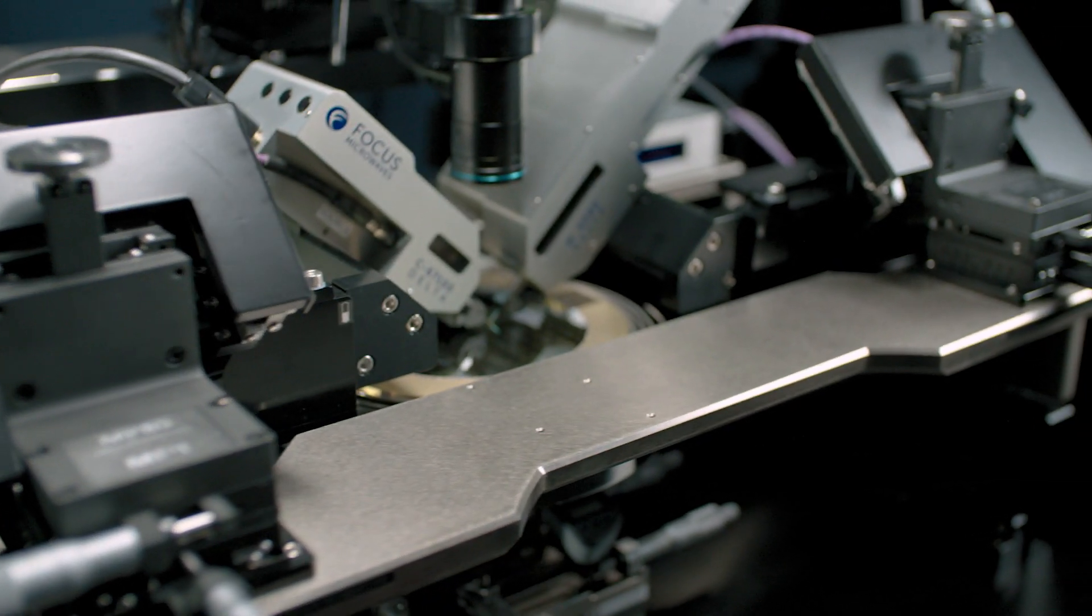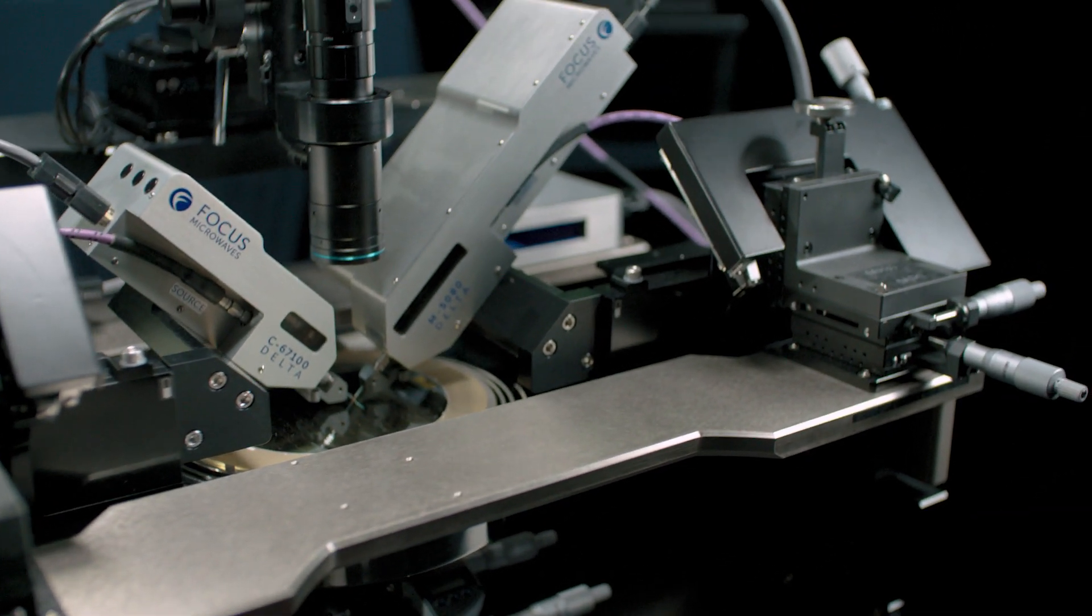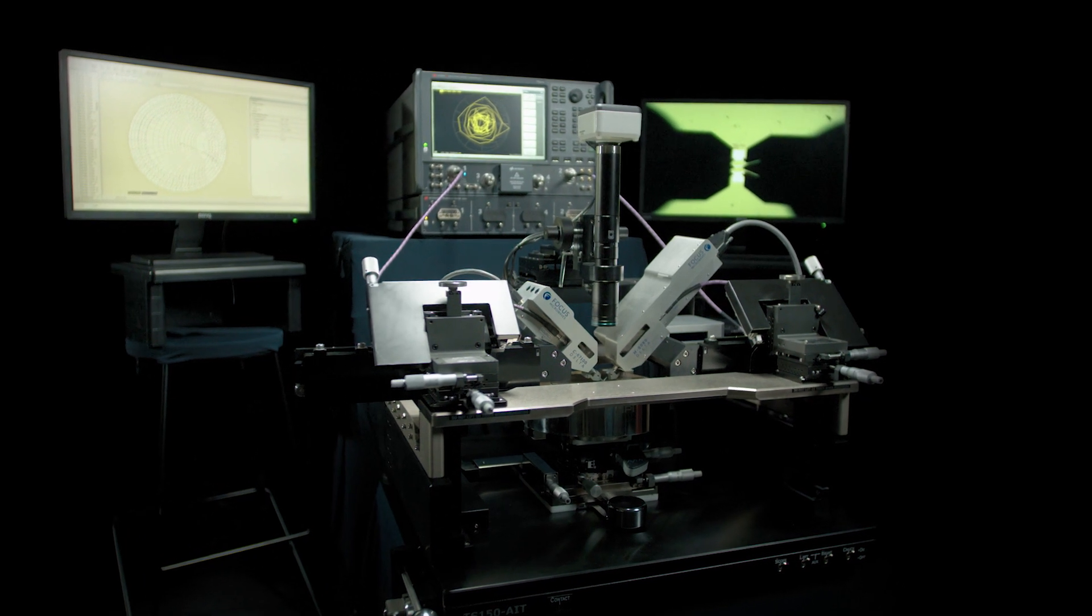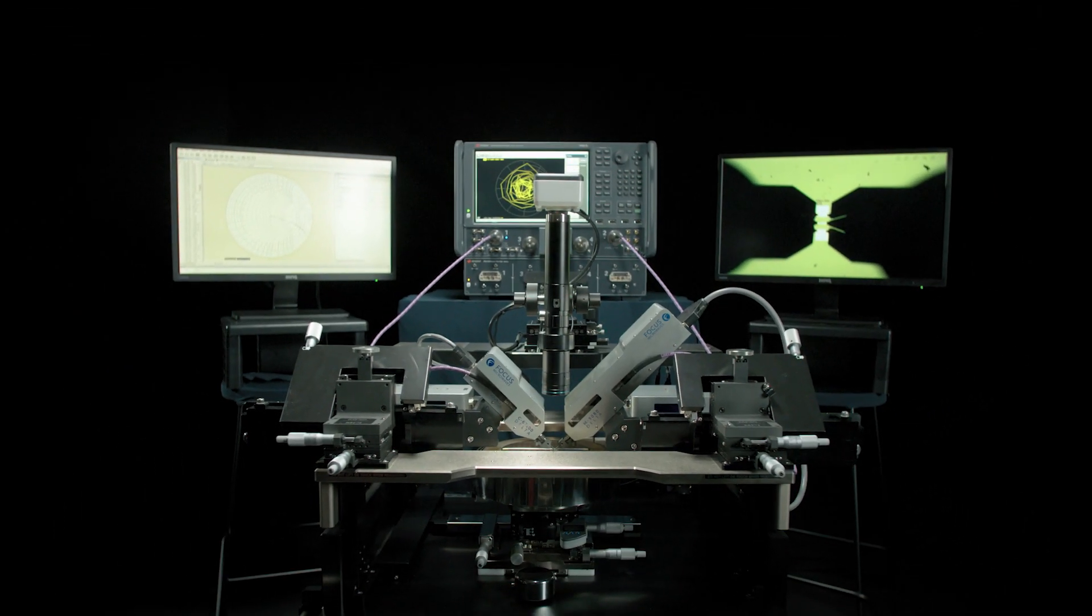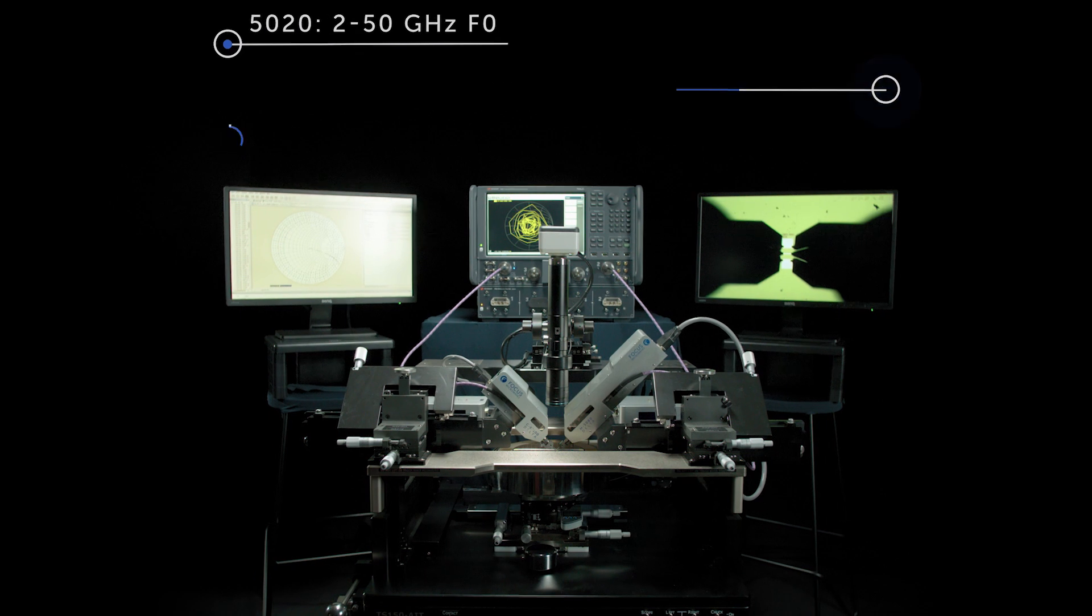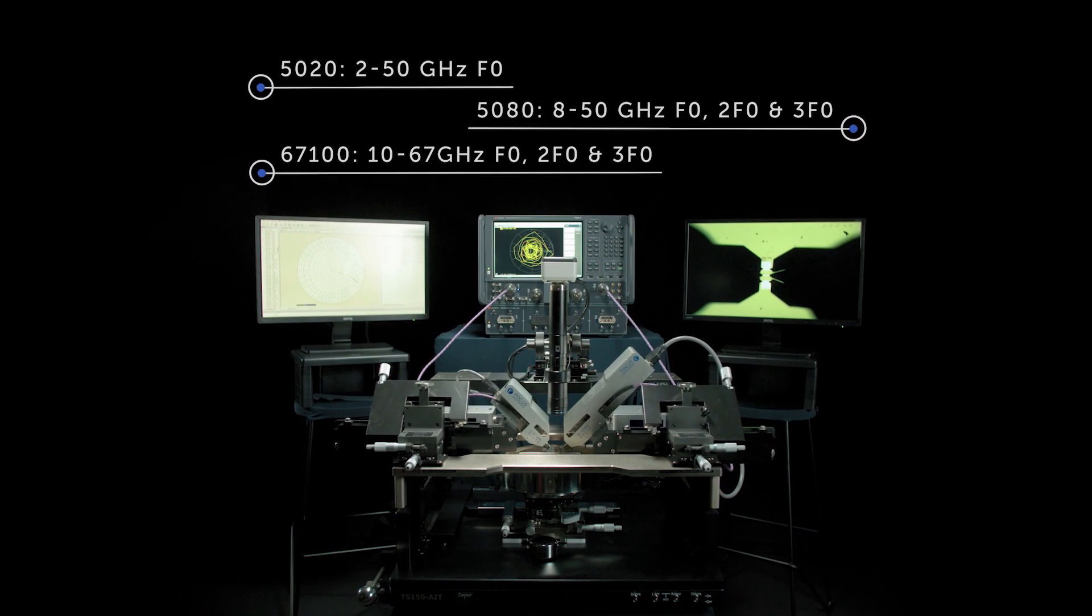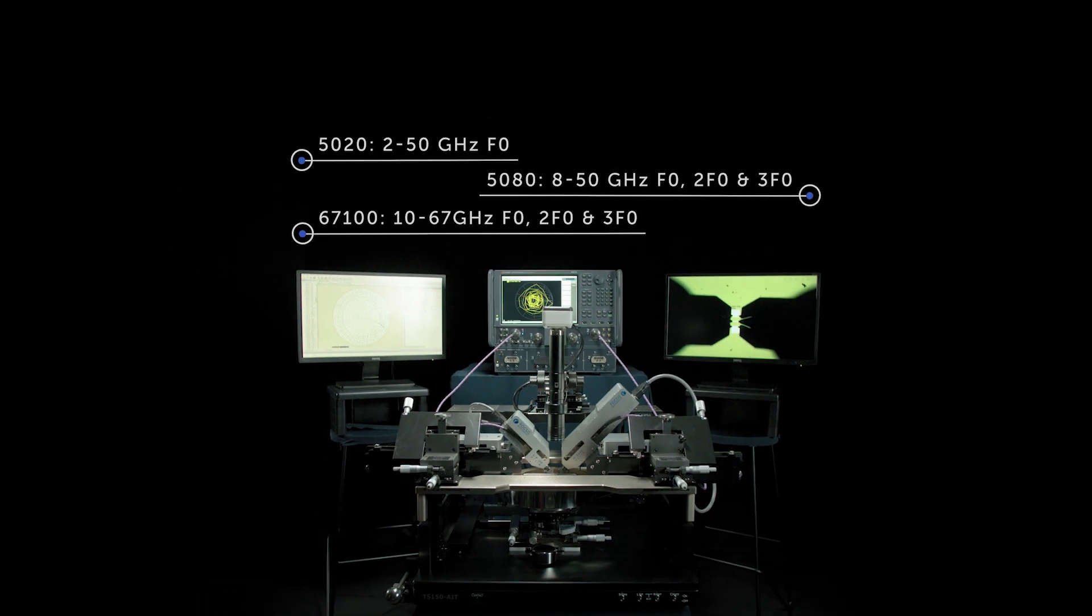This revolutionary new tuner design enables engineers to achieve optimum tuning range for millimeter wave applications. With models covering frequencies from 8 to 110 GHz in fundamental and harmonic configurations, the Delta series covers all high frequency measurement situations.